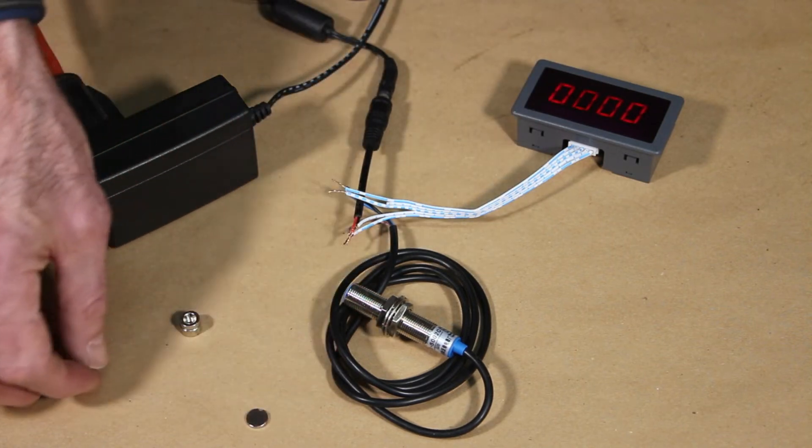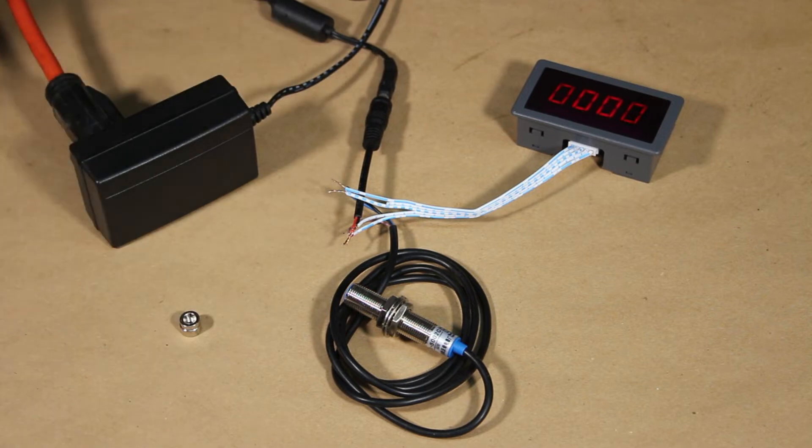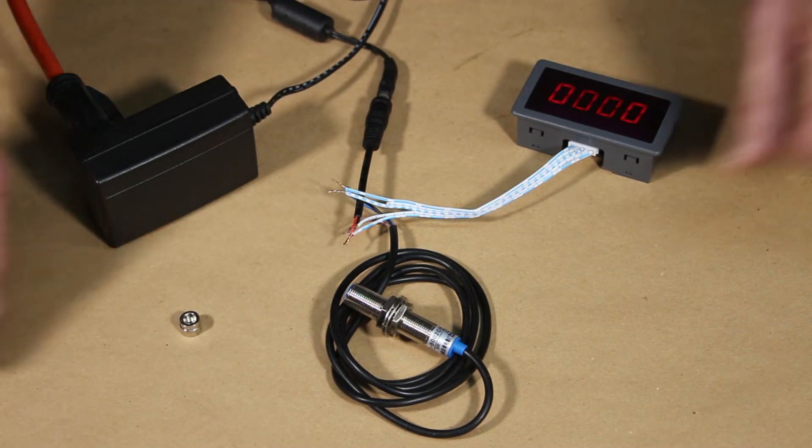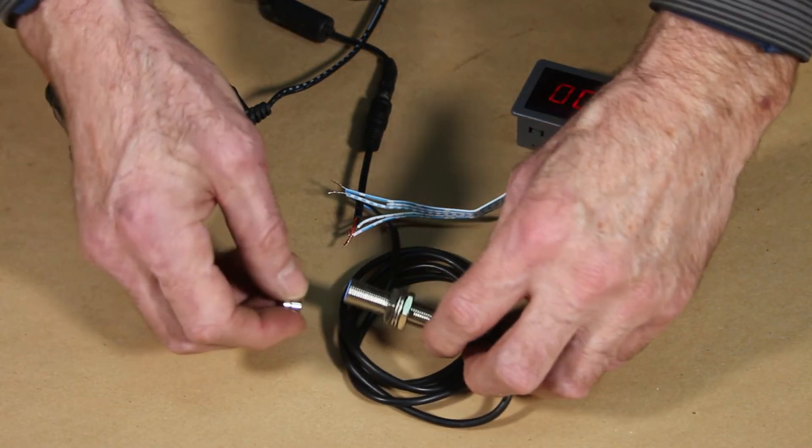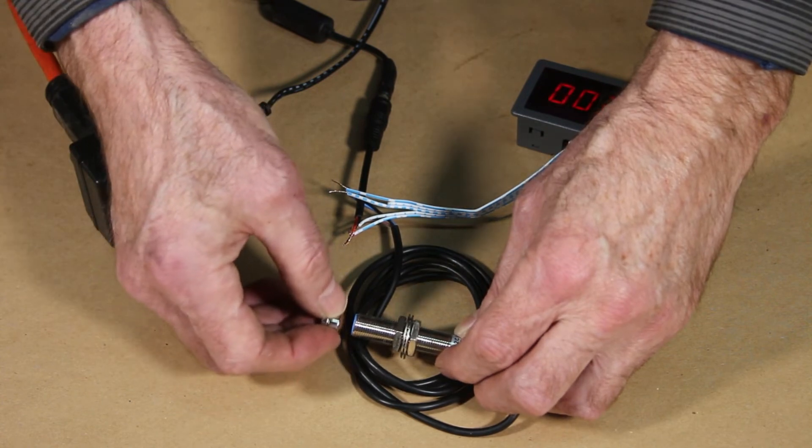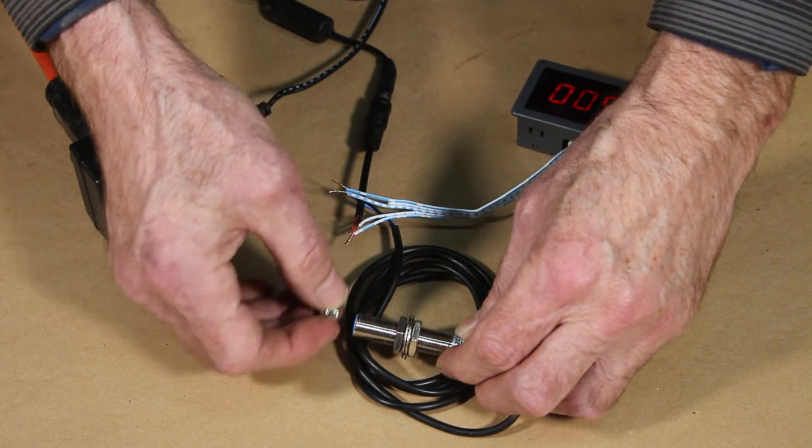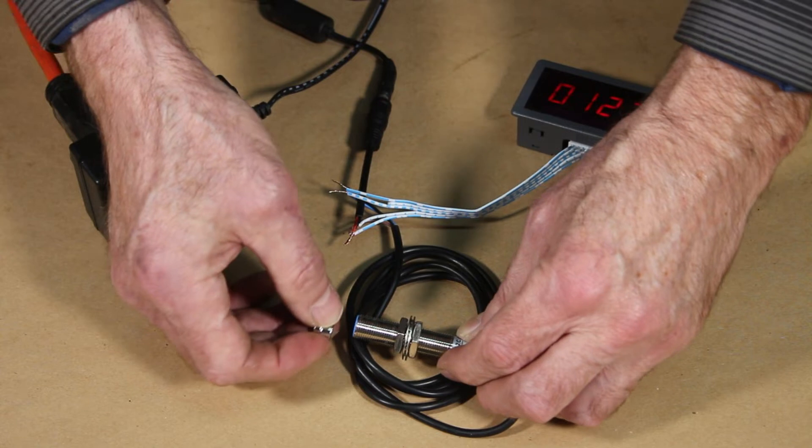This is the tiny little magnet that they give you, which I don't like, so let's lose that because it doesn't give you enough range. Let me show you how this works now. If I wave my magnet near it like that, it's starting to trigger. There we go. You can see it. I'll get my hand out of the way a little bit.